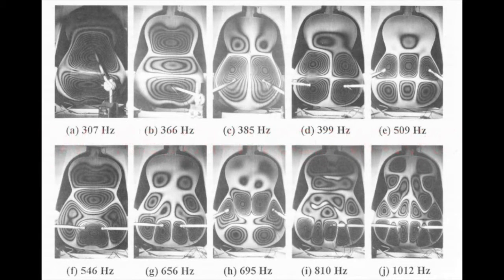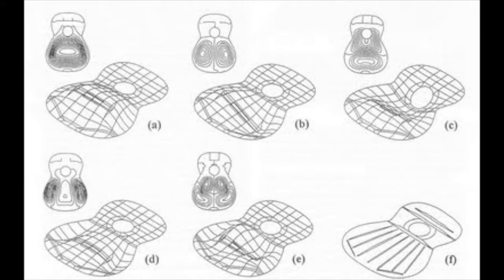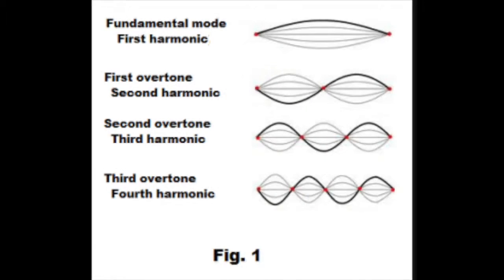These waves radiate away from the string, some of which are captured in the body of the guitar. The guitar's body acts as a resonance chamber, collecting the various frequencies and harmonics, and allowing them to bounce around and constructively interfere with each other. This deliberate collection of sound waves creates standing waves, which increase the amplitude of the waves, and ultimately create the timbre, or tone color, we've come to associate with the acoustic.